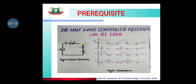After the SCR turns on and current flows, at pi (180°) the input voltage becomes 0, but the current does not become 0 because the inductor has stored energy. As we know, current lags in an inductor, so even though the voltage becomes 0, the current does not. The inductor has stored energy and it will gradually release it, so current continues to flow in the circuit.